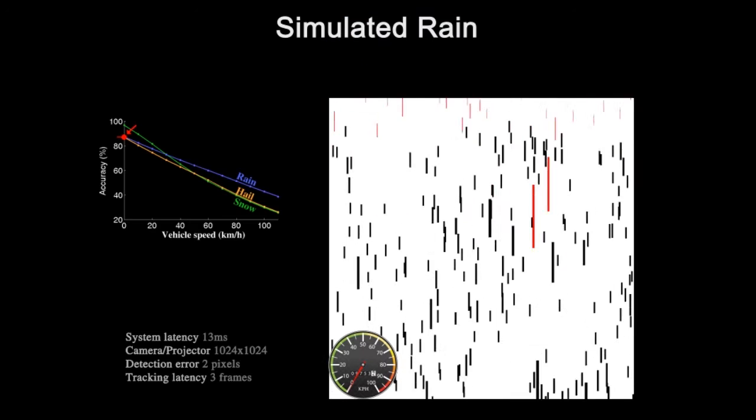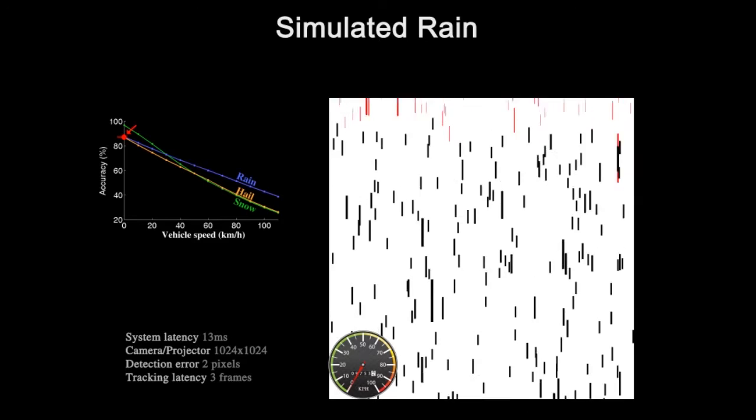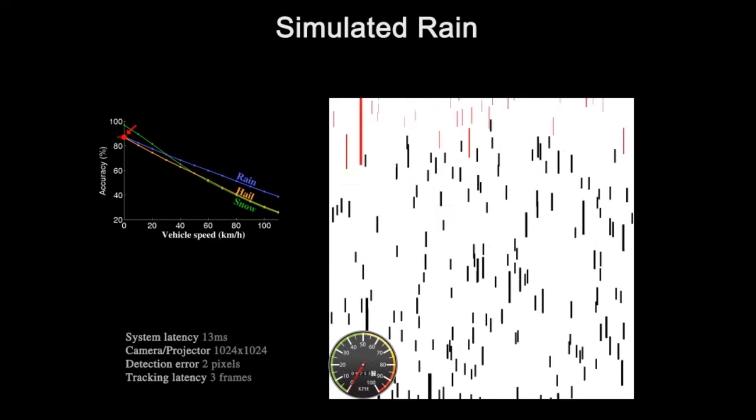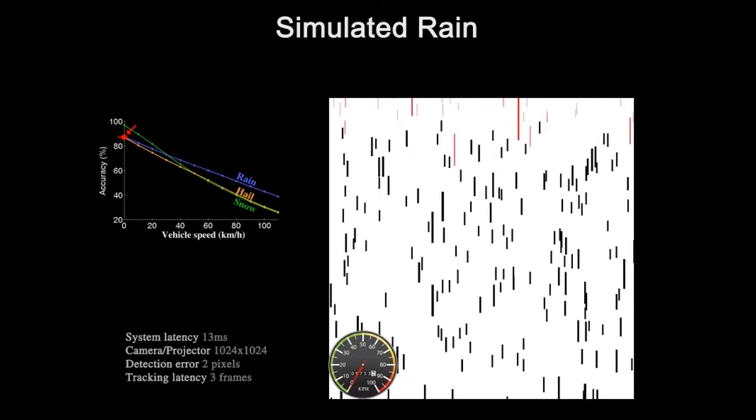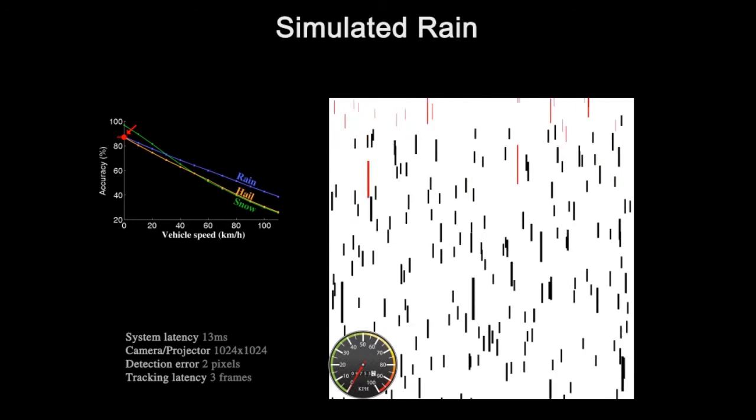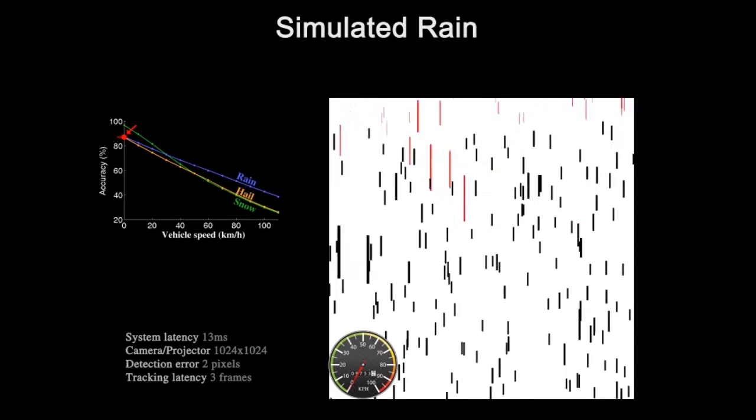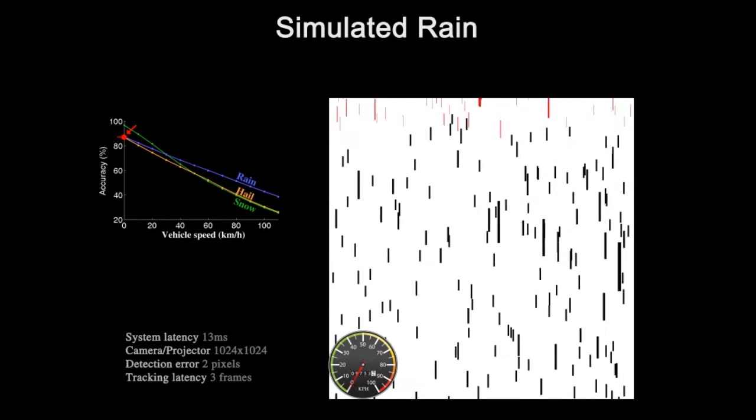Using simulation, we have investigated the requirements for such a system to be feasible. Here is a simulation of rain, 5 mm per hour, with a system latency of 13 milliseconds. Our adaptive projection system runs at 120 Hz.